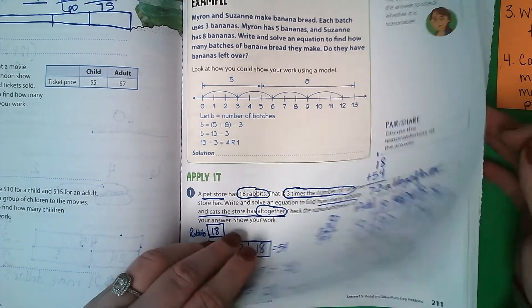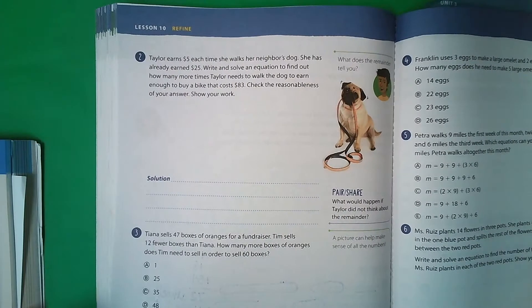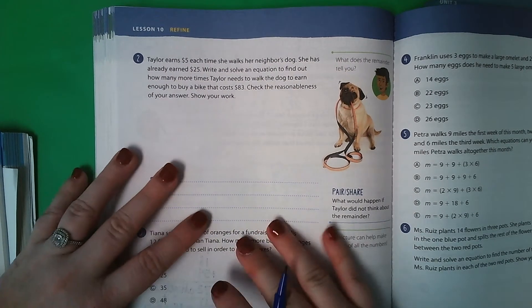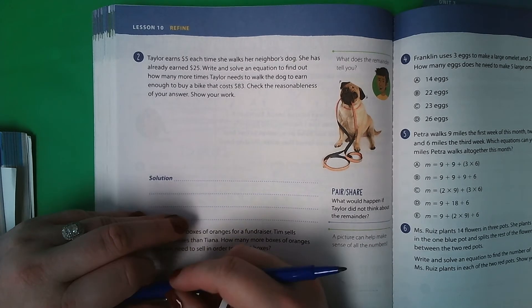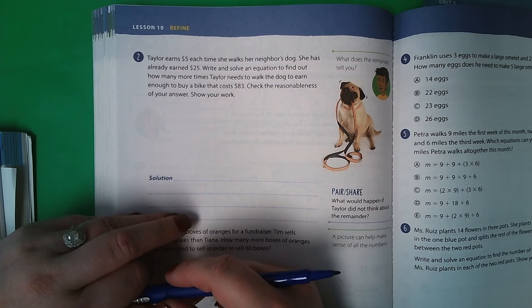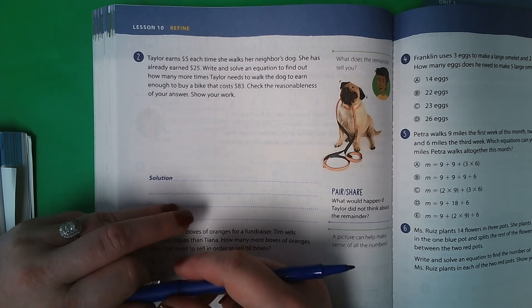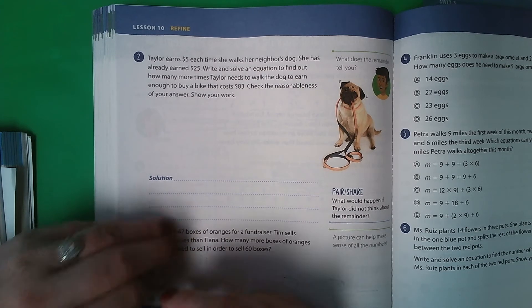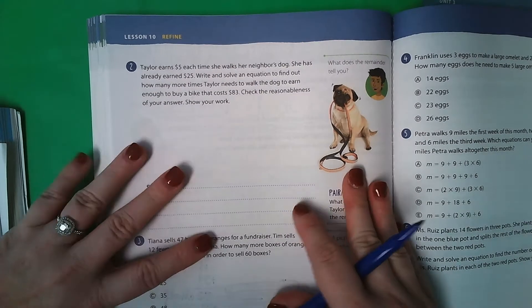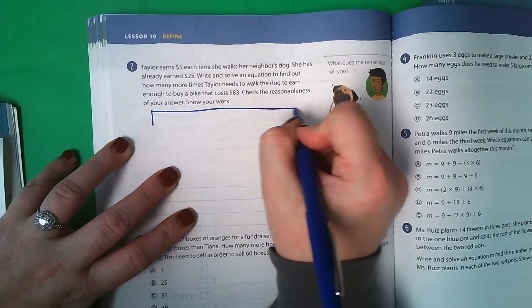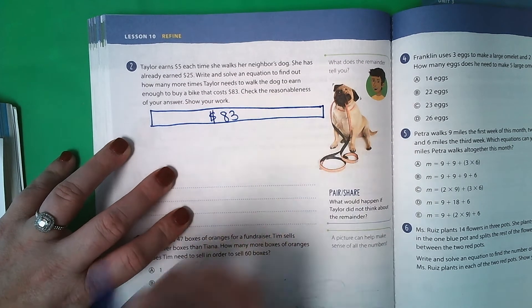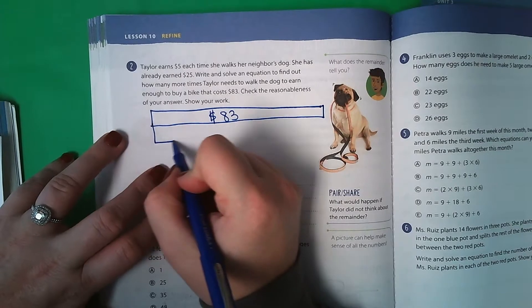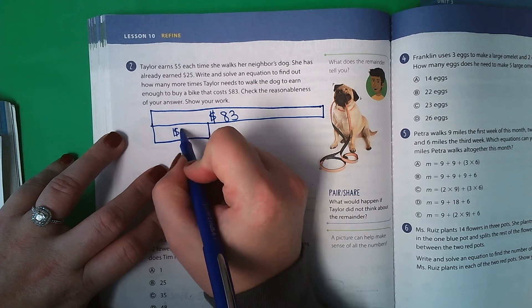Go ahead and turn to page 210. Taylor earns $5 each time she walks her neighbor's dog. She has already earned $25. Write and solve an equation to find out how many more times Taylor needs to walk the dog to earn enough to buy a bike that costs $83. Check the reasonableness of your answer. Show your word. So she needs to earn $83, okay? She has already earned $25.